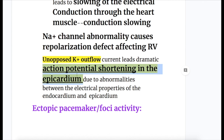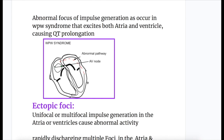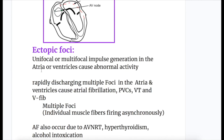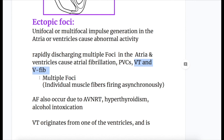We have separate videos on long QT syndrome and Brugada syndrome — please watch them for more details. Ectopic pacemaker foci: an abnormal focus of impulse generation, as occurs in Wolff-Parkinson-White syndrome, excites both atria and ventricle causing QT prolongation. Unifocal or multifocal impulse generation in the atria or ventricles causes abnormal activity. Rapidly discharging multiple foci in the atrial ventricle cause atrial fibrillation, PVCs, VT, and VF. Multiple foci cause individual muscle fibers to fire asynchronously, making them unable to push blood out of the cavity.